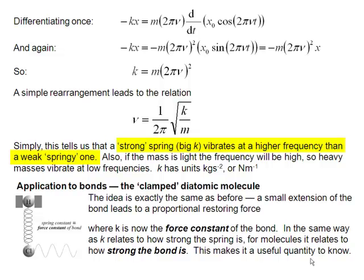And if we have, conversely, a weak spring, small k, then the frequency is going to be low. In addition, the frequency scales with the square root of 1 over the mass. So if we make the masses smaller, we're going to make the frequency higher. And if we make the masses large, we're going to make the frequencies smaller.